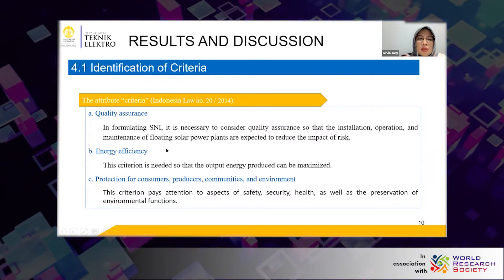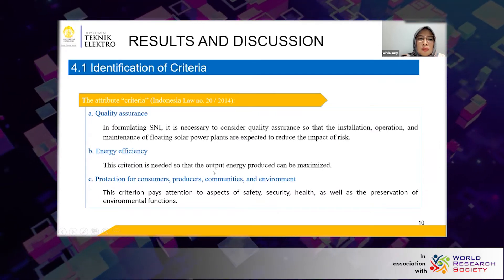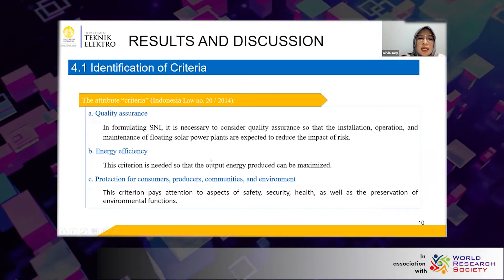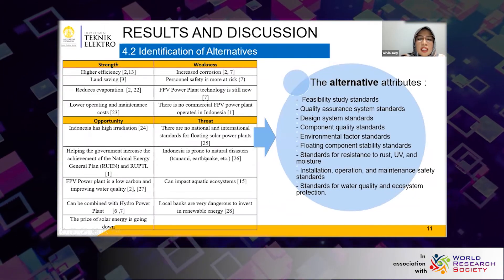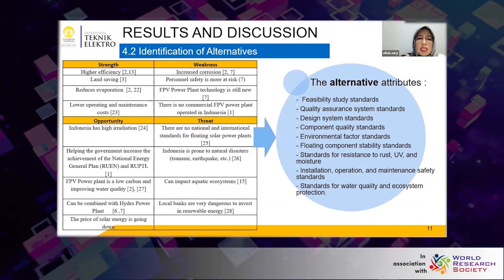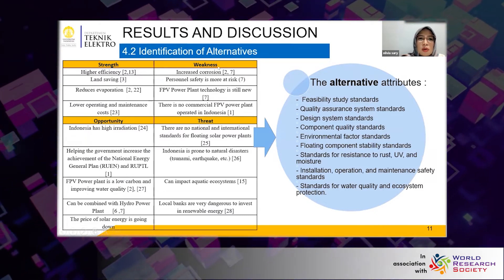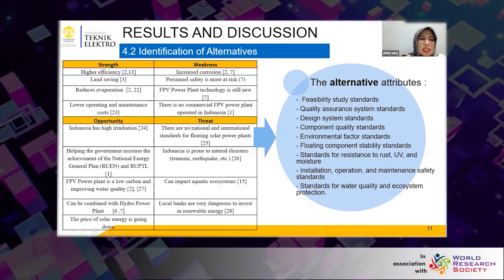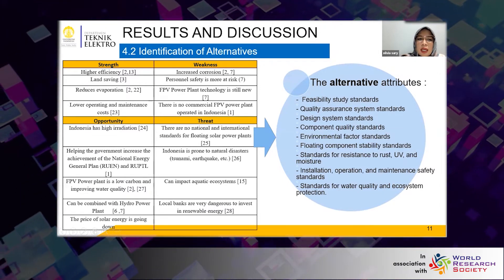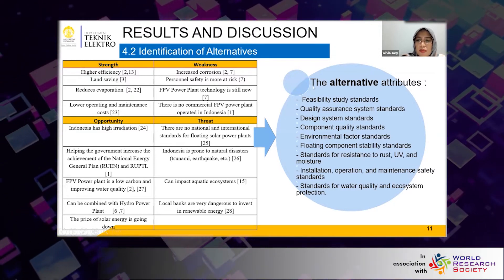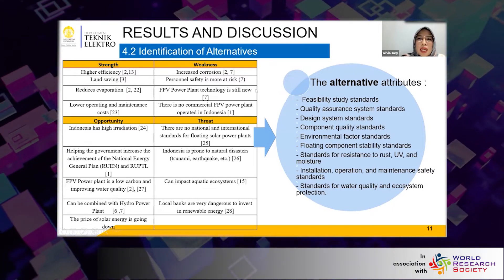From the literature review, this paper identified that quality assurance, energy efficiency, and protection for consumers, producers, communities, and the environment are three main criteria that influence the purpose of formulating a national standard. The results of the SWOT analysis of FPV implementation in Indonesia identified that, based on the weaknesses and threats of the SWOT matrix, the standards needed for FPV implementation in Indonesia can be identified. These become the alternative attributes in the AHP structure.